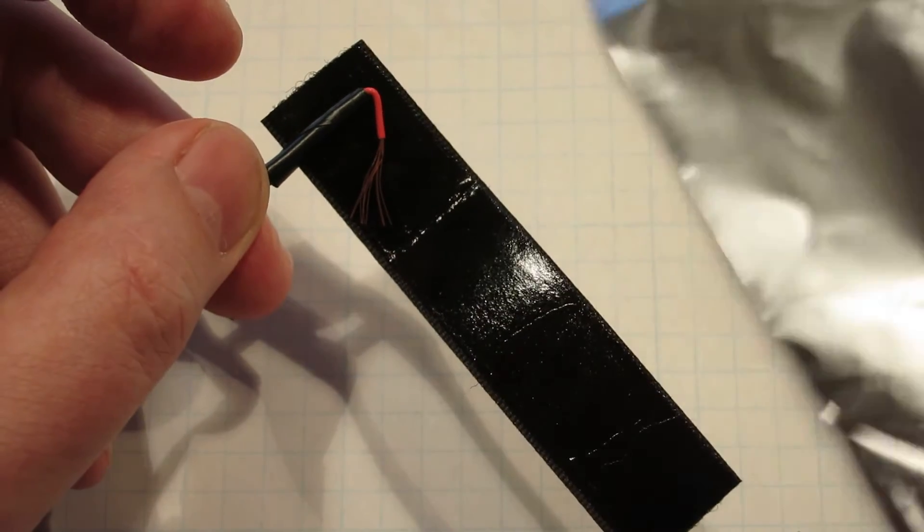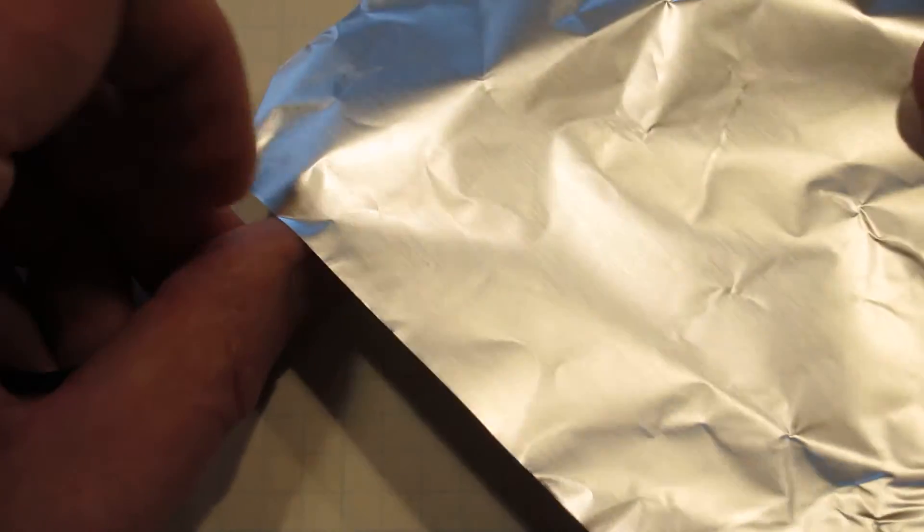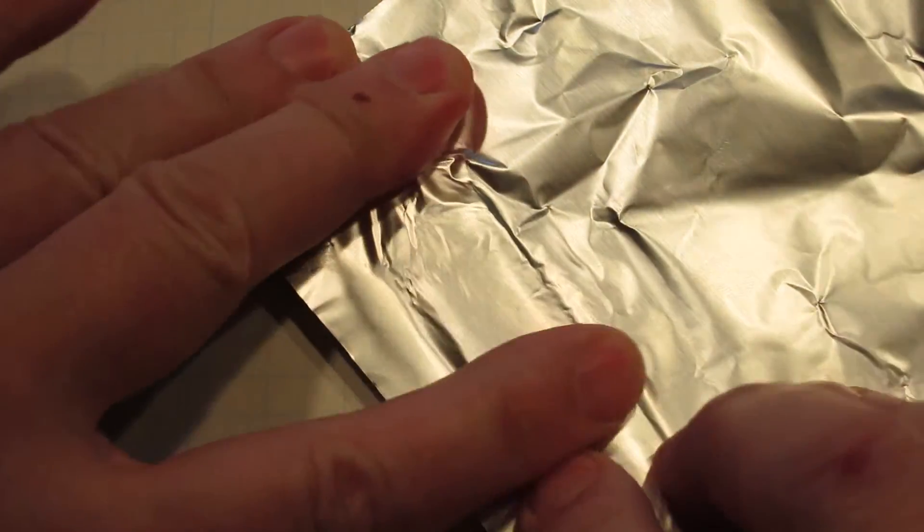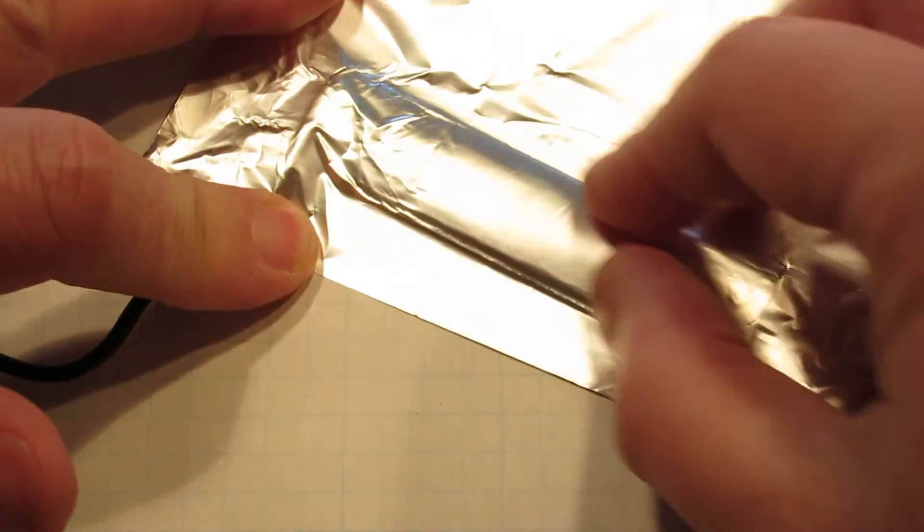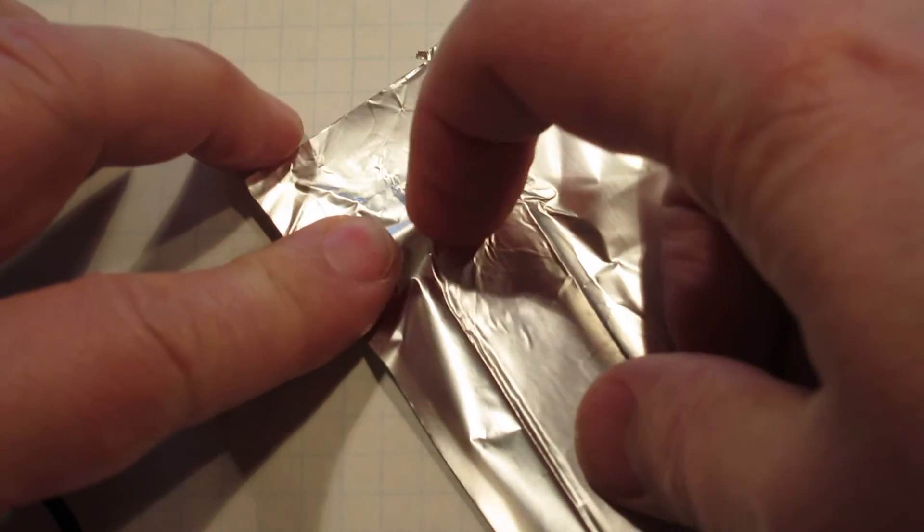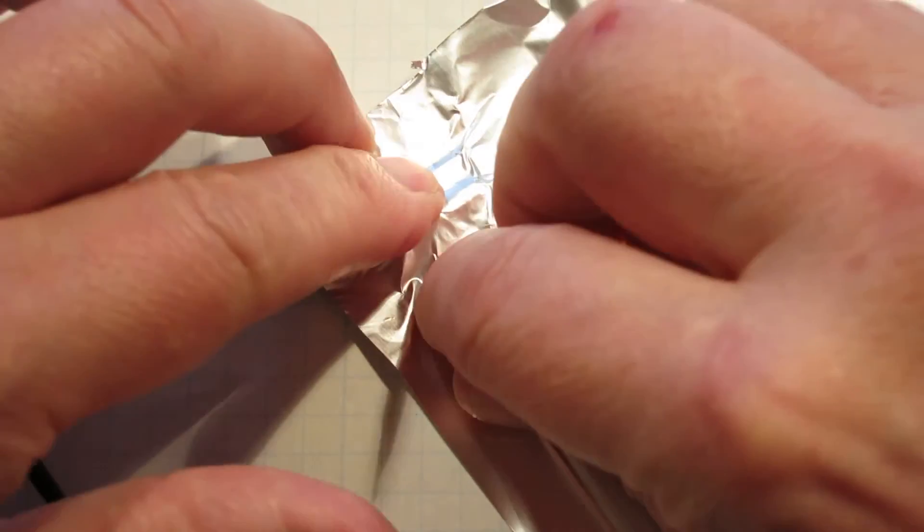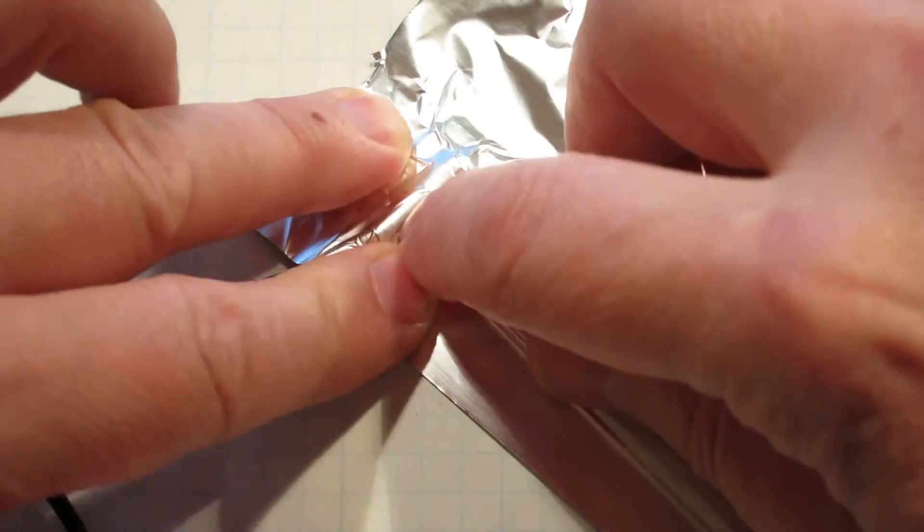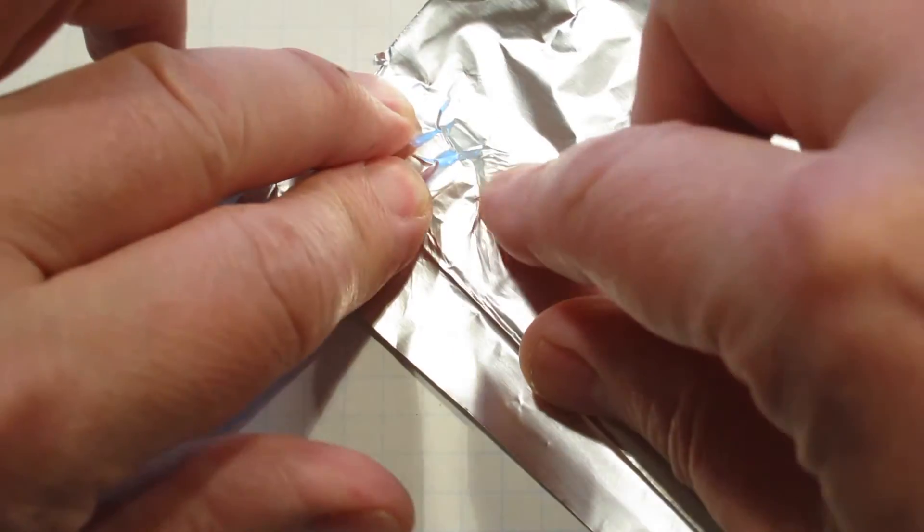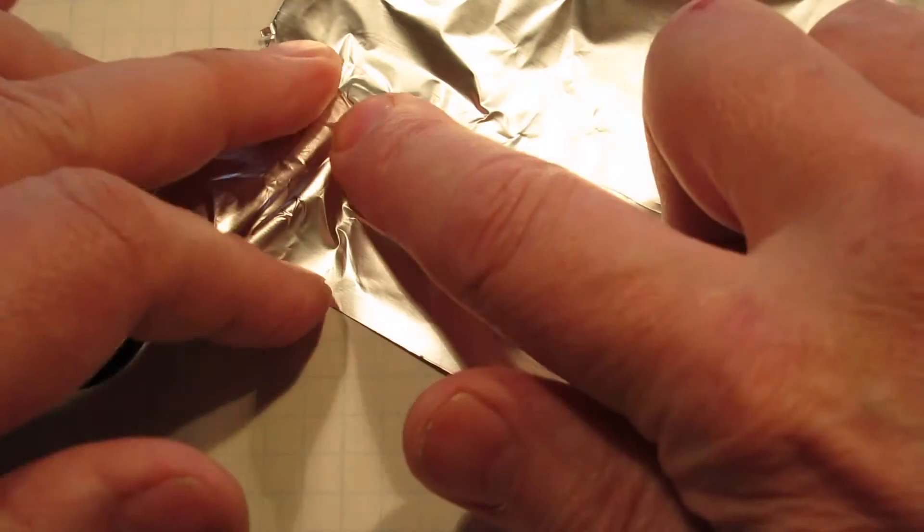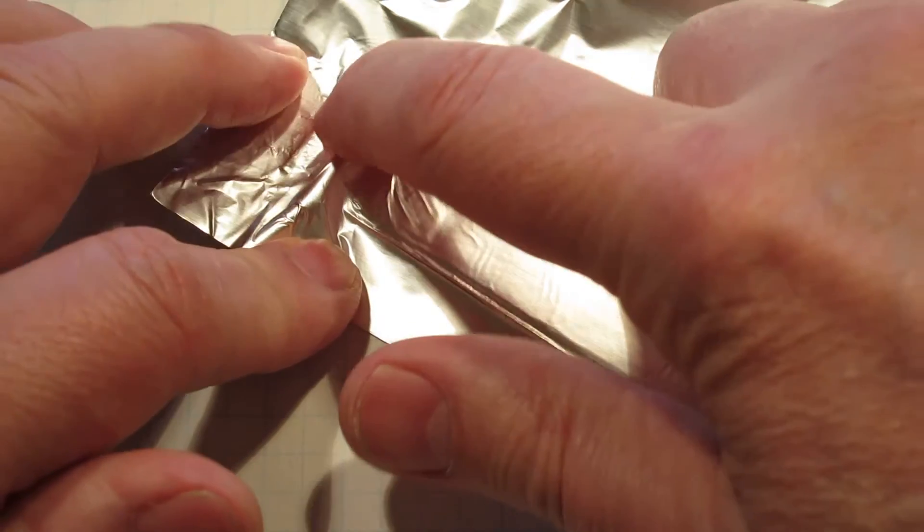We're going to take aluminum foil and just let it get stuck. Work the wire so that it's both stuck to the Velcro but the wire's in contact with the aluminum foil.